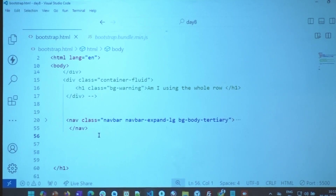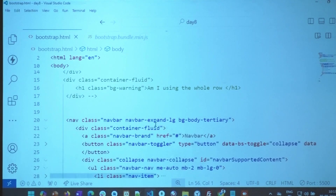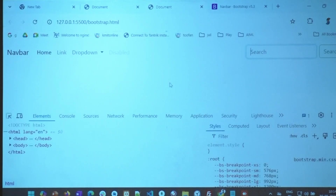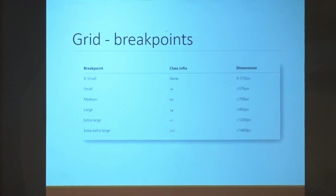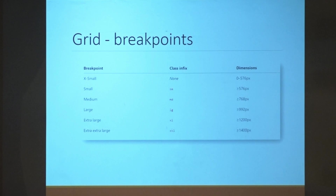Remember, I'm going to explain what 'mobile first' is. In Bootstrap, they have divided the screens: extra small is your mobile screen (vertical phone, XS), small is when you rotate your phone, medium is tablet, large is laptop, extra large is desktop, and extra-extra large is anything more than that — like big conference room screens.